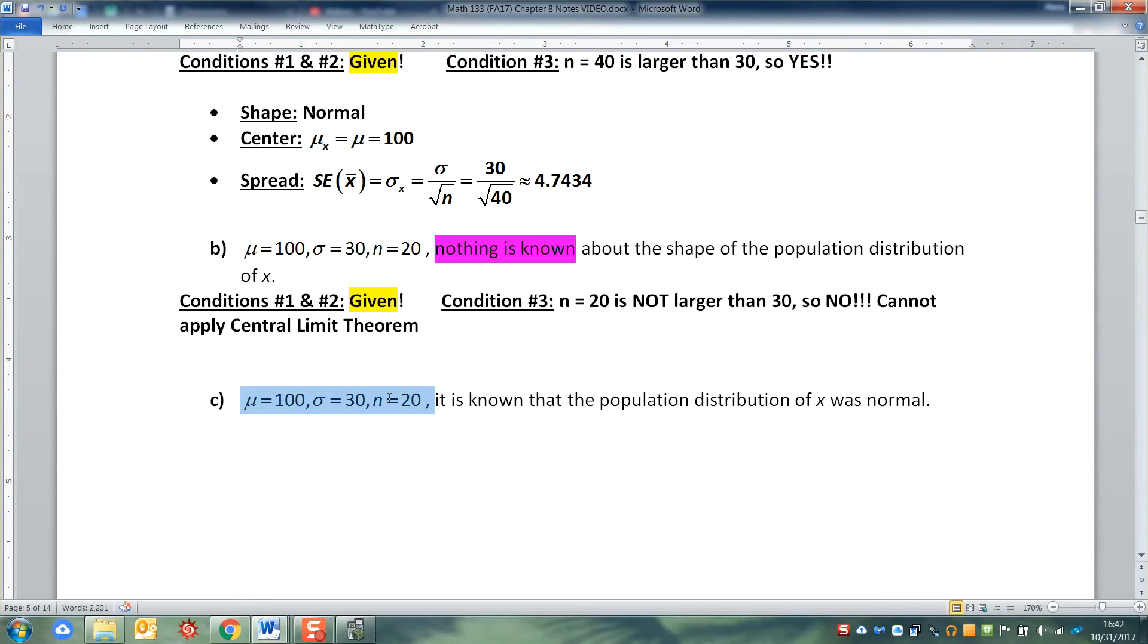Okay, well, you might be worried about n = 20 on this one as well. However, it is known that the population was normal. So I'm actually giving you conditions one, two, and three. Right here, I'm telling you right now that the population is normal. Right there. So that means that I'm not only giving you conditions one and two, like above, I'm actually giving you condition number three on a silver platter.